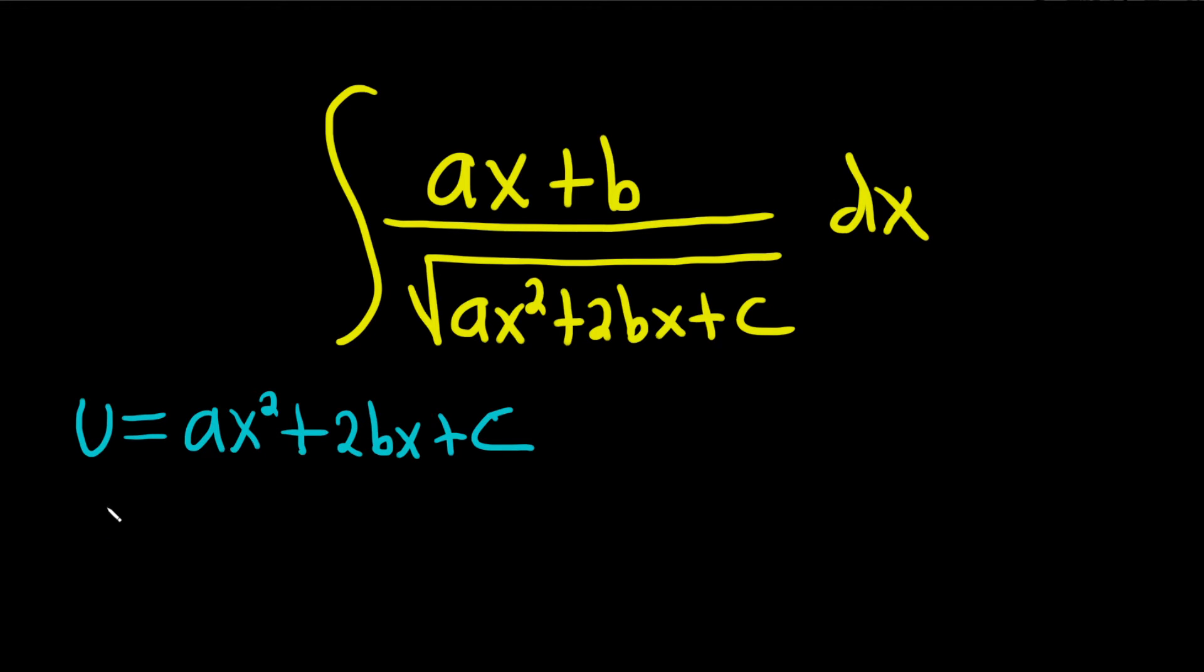Now we're going to go ahead and take the derivative of both sides here. So the derivative of u is just du. Here the a and the b and the c are constants. So when you take this derivative, you just bring down the 2 here and use the power rule.